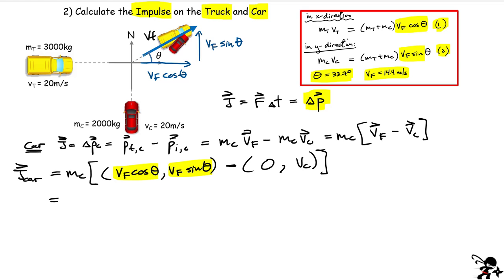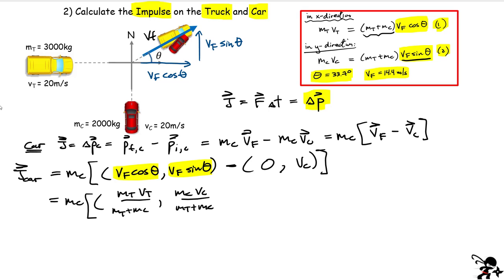vf·cos(θ) can be written as mt·vt divided by the total mass, and vf·sin(θ) as mc·vc divided by the total mass. So the impulse on the car is mc times the vector [mt·vt/(mt+mc), mc·vc/(mt+mc)] minus the vector [0, vc]. This avoids any rounding error from the truncated angle.